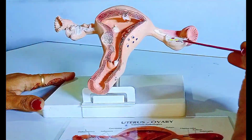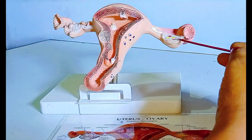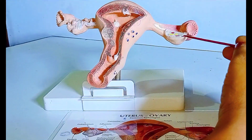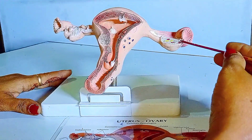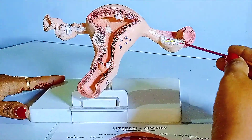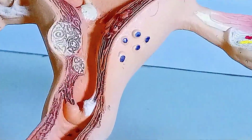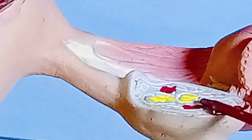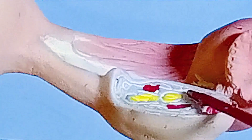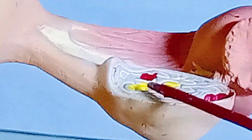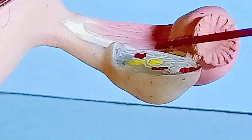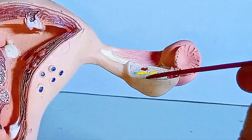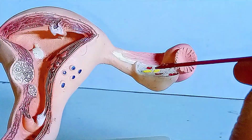The ovary is considered as the primary female sex organ. The ovary produces the female gamete, that is the ova, and it secretes the ovarian hormones. The first ovarian hormone is estrogen and the second one is progesterone.